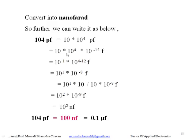Now this picofarad can be replaced by 10 raised to minus 12, as shown in the table. So this becomes 10 into 10 raised to 4 into 10 raised to minus 12 farads. To convert this into nanofarad, we need to derive the power to minus 9. We can see that 10 raised to 4 minus 12 gives 10 raised to minus 8, and the 10 in front is 10 raised to 1. We can multiply and divide by 10: multiplying gives 10 raised to 2, and dividing shifts minus 8 to minus 9.